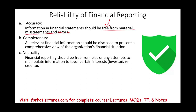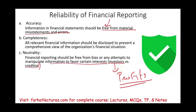Neutrality means we don't favor one group of users over others — for example, we don't favor investors over creditors. Financial reporting should be free from bias or any attempt to manipulate information to favor certain interests. We don't want the system to produce reports biased toward high profit for investors or toward cash position for creditors.